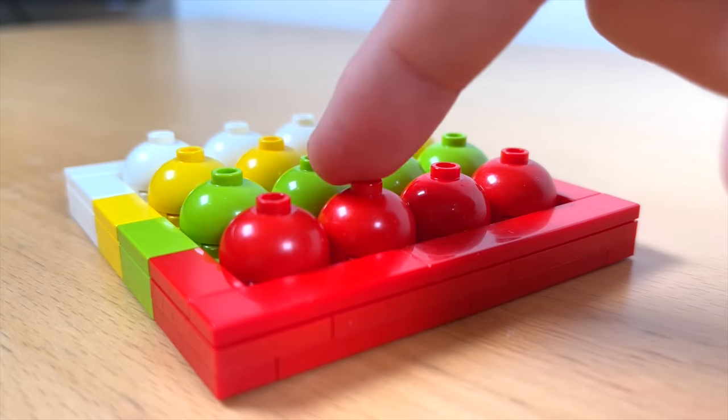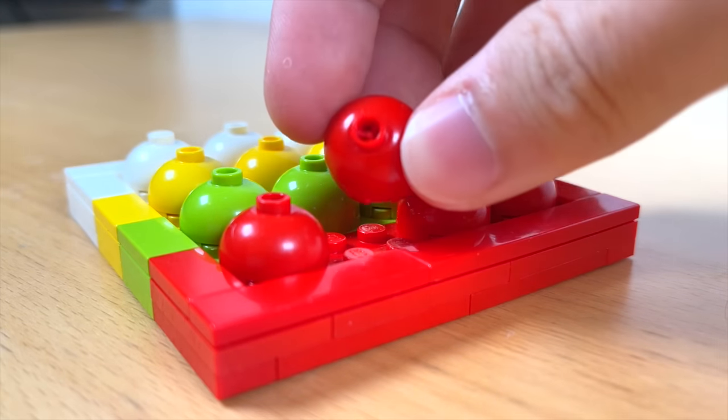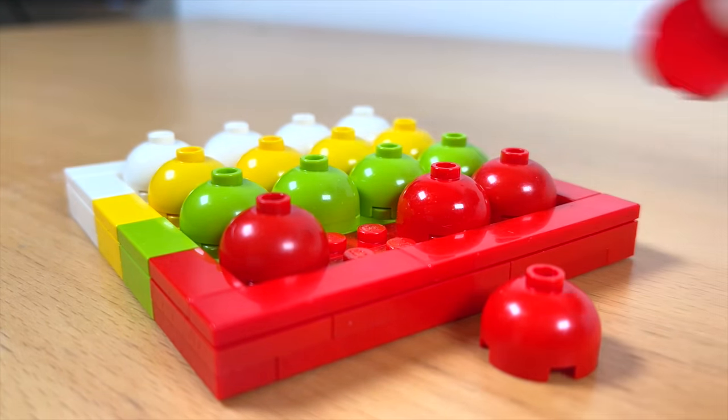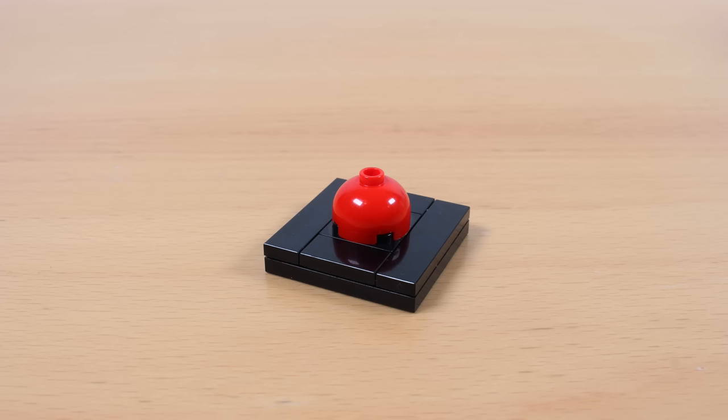Now I obviously can't just press down on these since they're solid bricks. I have to use the magic of animation once again. Here's how the animation is gonna work. I have my finger and while taking pictures, I'll place it on top of the dome piece and in the next frame, I'll replace the dome piece with a round 2x2 tile to make it look like it got pressed. Here's an example I made with this tiny red button.